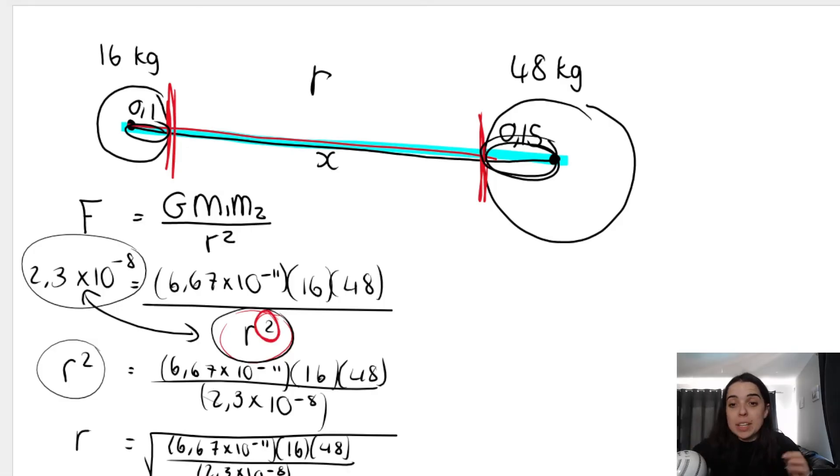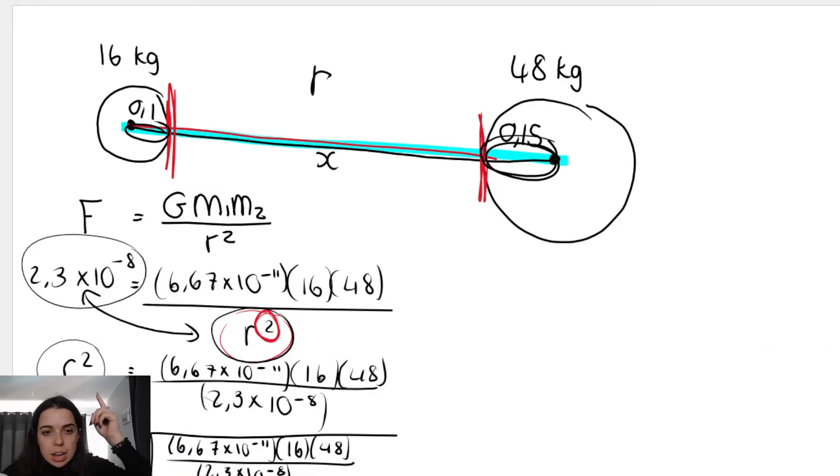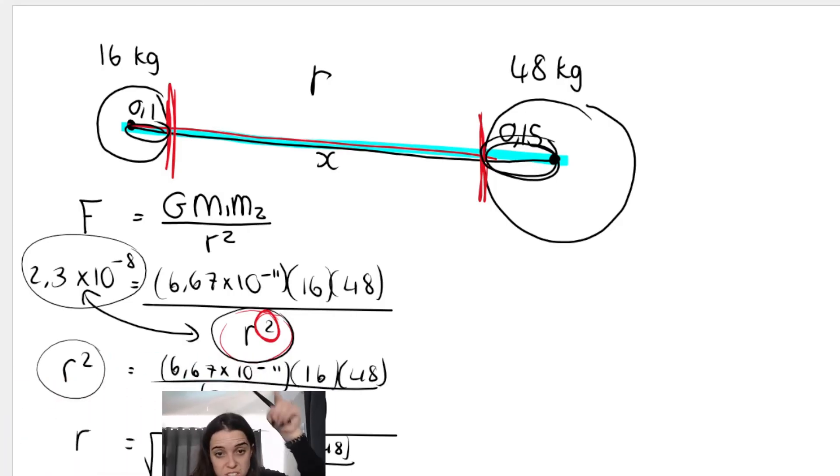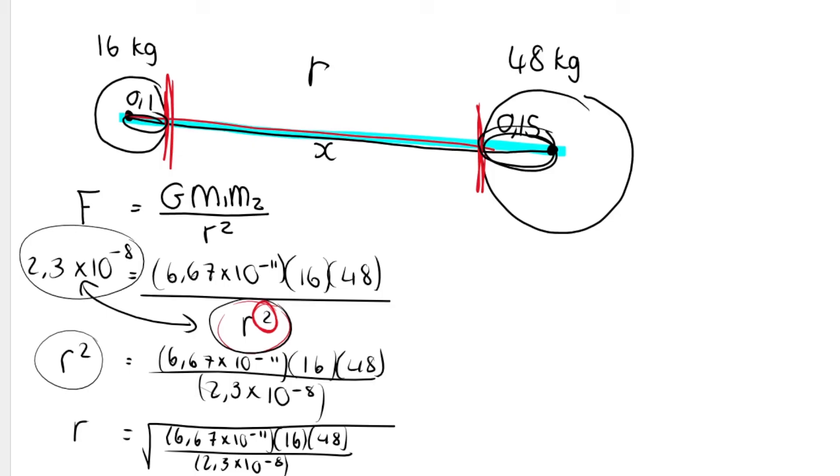So what I basically did is I'm just solving. I square rooted this side, it got me R. I square rooted this entire fraction and I'm going to type it in literally as is on my calculator.